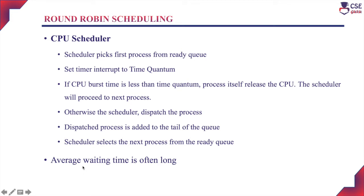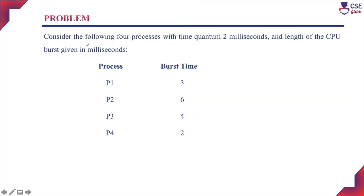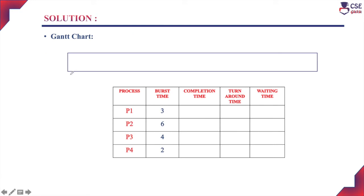Now we will solve a problem based on the Round-Robin scheduling algorithm. Consider the following four processes with a time quantum of 2 ms, and the CPU burst times given in milliseconds. There are four processes with their respective burst times. First, we need to construct the Gantt chart, which is a bar chart showing the starting time and completion time of each process clearly. We also need to find the completion time, turnaround time, and waiting time using this Gantt chart.